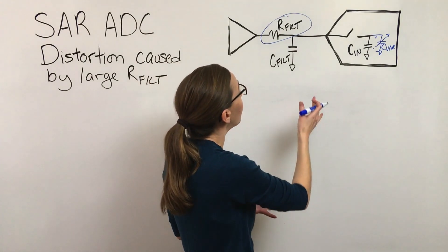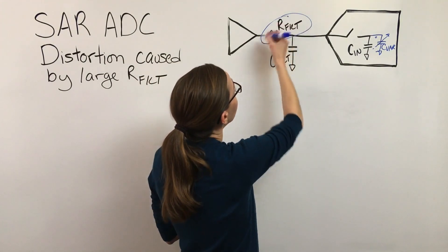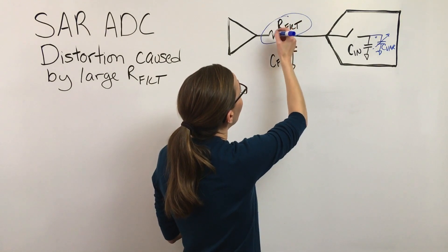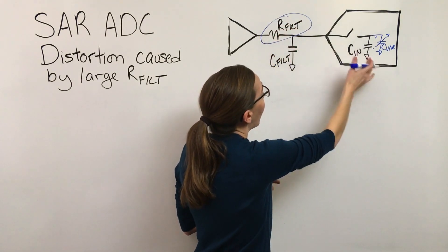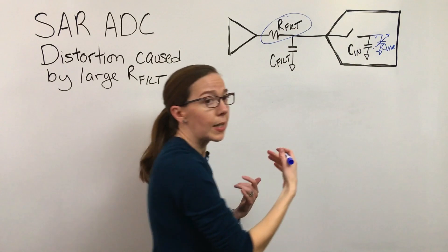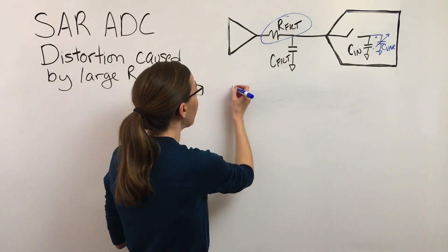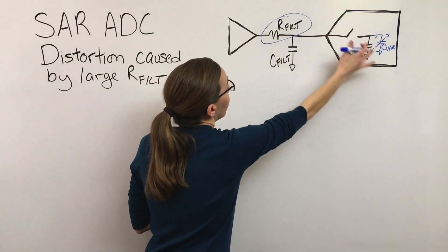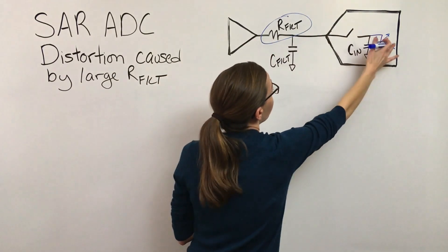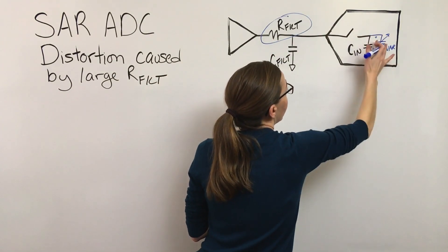So it's this non-linear variation that contributes to this distortion, which is a non-linear AC error. It helps to understand why larger values of this resistor contribute to the distortion.